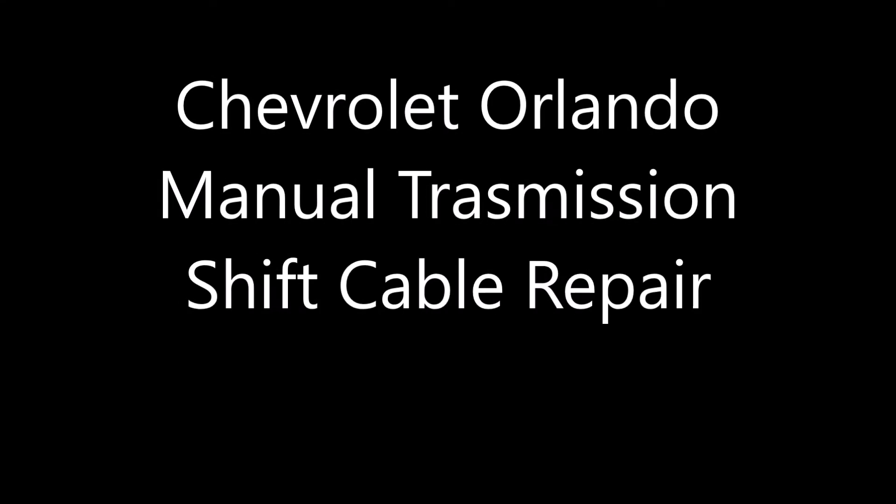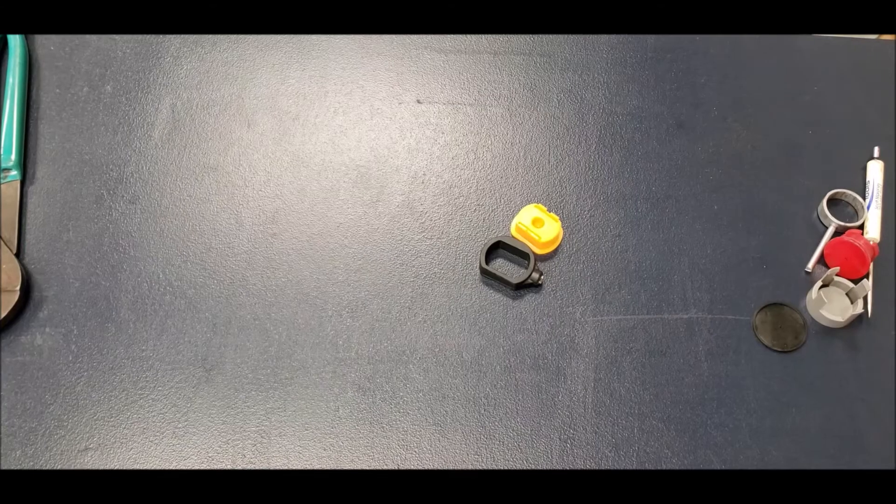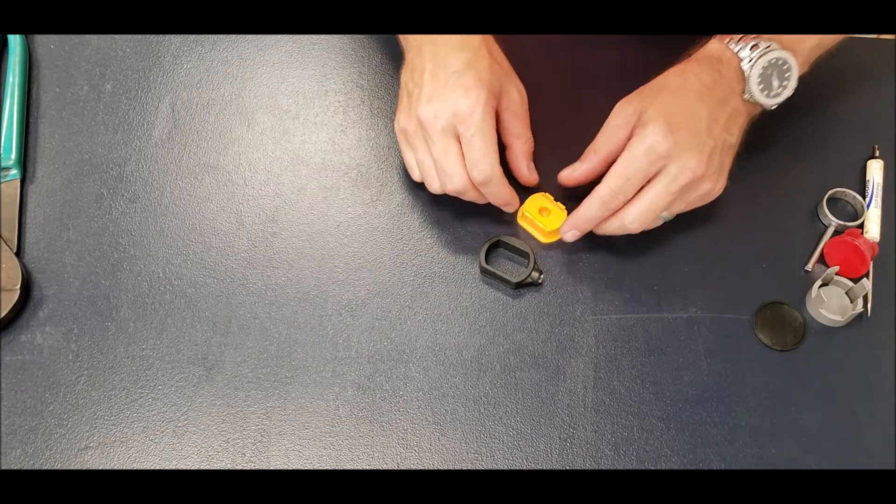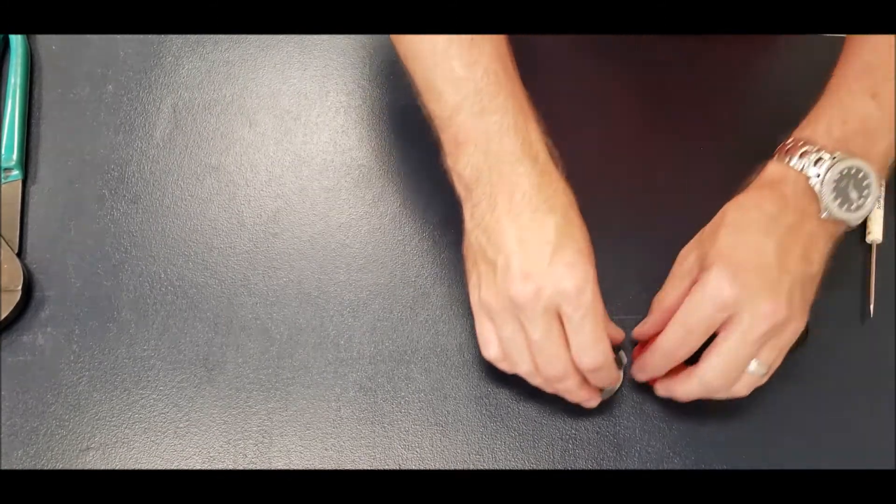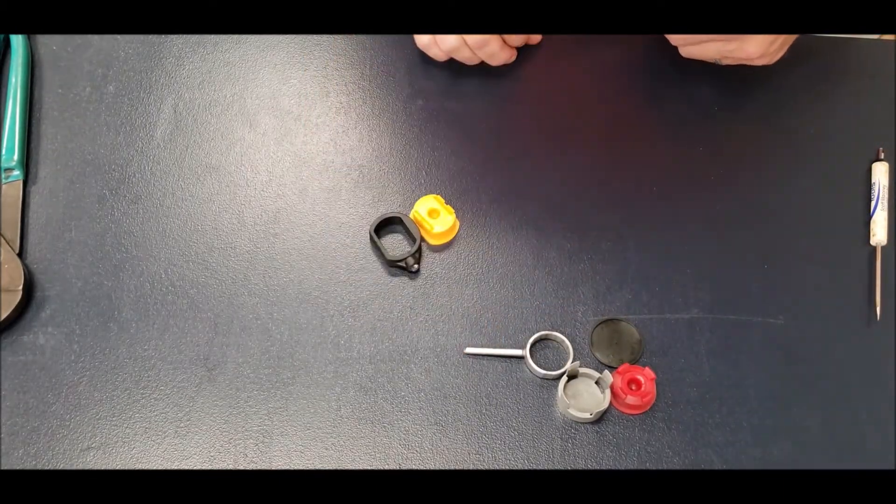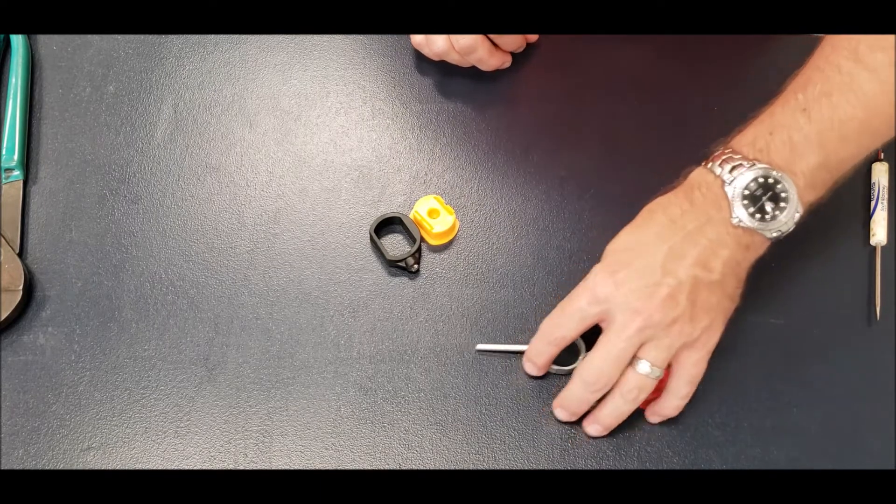This is a bushingfix.com video for the CA1 kit, which comes in two variations. A lot of cars will have two round cables. Some cars will have one round and one oblong cable, so make sure you've got the correct kit for your vehicle.